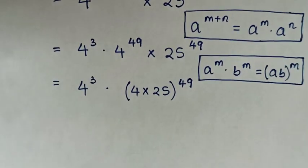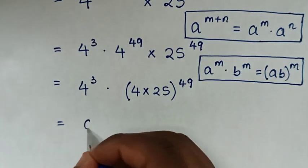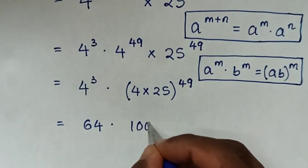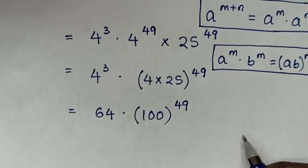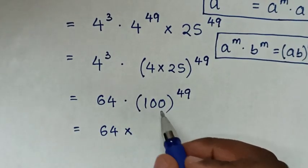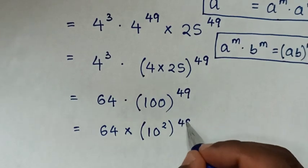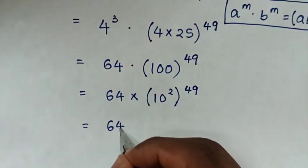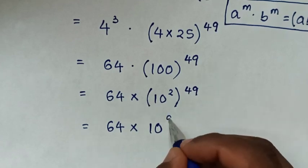Then, in the next step, it will be equal to: 4 power 3 is 4 times 4 times 4, which is 64, then times 4 times 25 is 100, bracket power 49. Then, in the next step, it will be equal to 64, then times 10 power 2 times 49, is power 98.